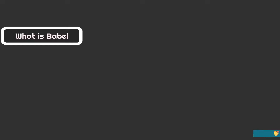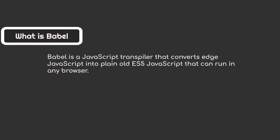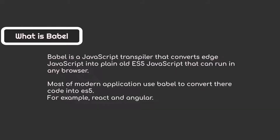Now let me tell you what is Babel. If you already know what is Babel, then skip this Babel intro. Babel is a JavaScript transpiler that converts each JavaScript into plain old ES5 JavaScript that can run in any browser. Because most browsers are not compatible with ES6, you can transcompile your code from ES6 to ES5 using Babel. Most modern applications use Babel to convert their code into ES5 — for example, React and Angular.